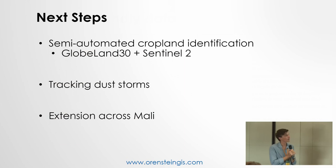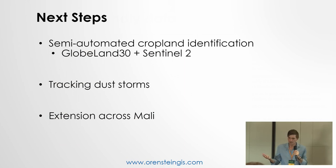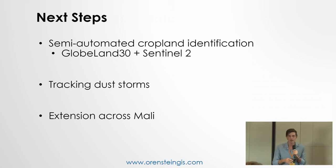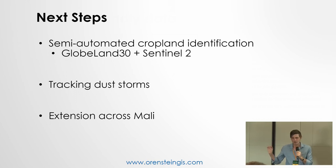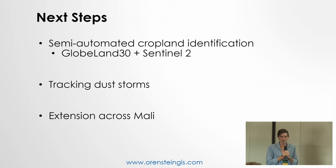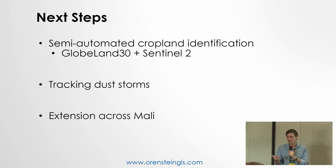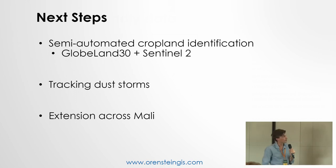The next steps: we will be developing a semi-automated system for cropland identification. Right now we have vectorized field data we've collected, but Gao is enormous and getting on-the-ground field data for the entirety of Gao is just not going to happen. So we are developing cropland masks, because in the interface it is very important to distinguish between cropland and pasture — not all of this green space will be accessible. We're also in the process of tracking dust storms and extending the service generally across Mali.